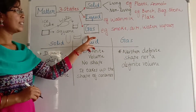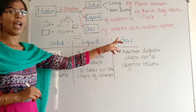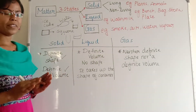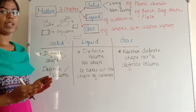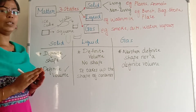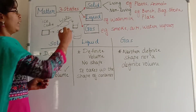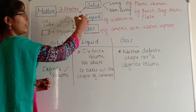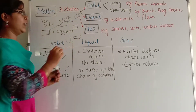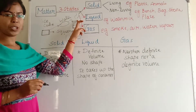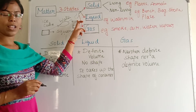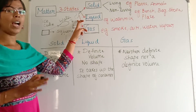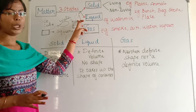In gas, for example, smoke, air, water vapor — it has neither a definite shape nor a definite volume. It has no shape, no volume. When water evaporates and forms water vapor, that water vapor has no shape and also it has no volume.